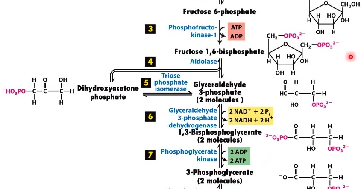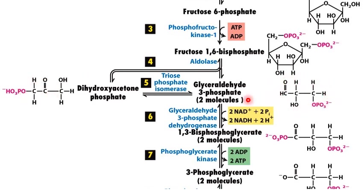In step number 4, the enzyme aldolase acts on the fructose 1,6-biphosphate and splits this into dihydroxyacetone phosphate or DHAP and glyceraldehyde-3-phosphate. These two 3-carbon molecules are isomers of each other. Out of them, only the glyceraldehyde-3-phosphate can directly continue through the next step of glycolysis.